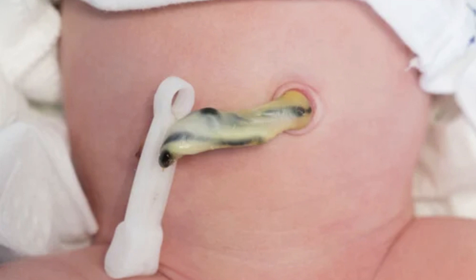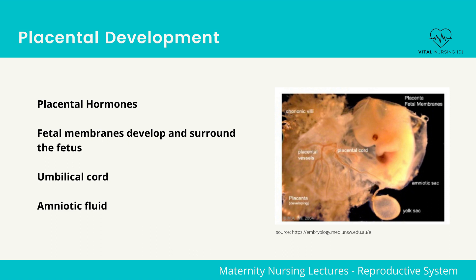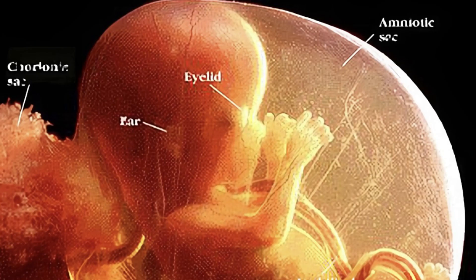The umbilical cord has no pain receptors and is encased in Wharton's jelly, a thick substance that surrounds the umbilical cord and acts as a buffer, preventing pressure on the vein and arteries. The umbilical cord is also covered by chorionic membrane.